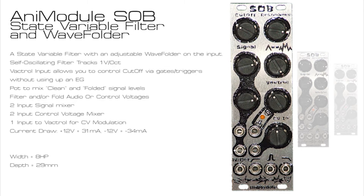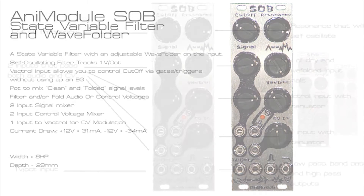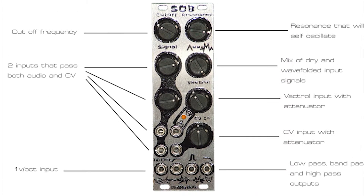The SOB is a state variable filter with outputs for low pass, band pass, and high pass. It has two inputs which can pass both audio and CV, with attenuators on both inputs.